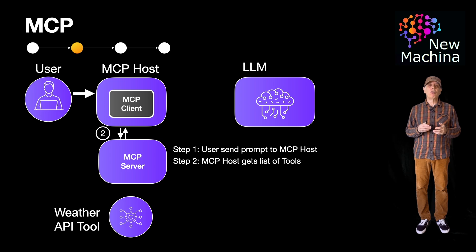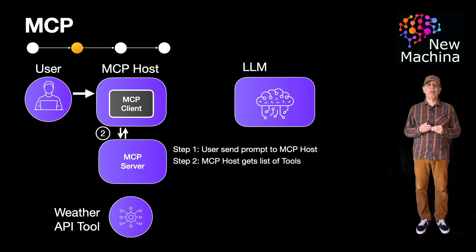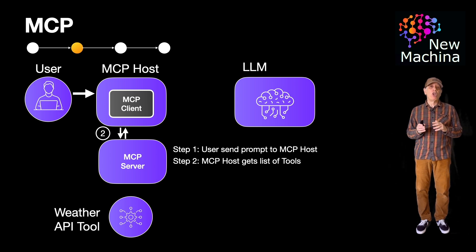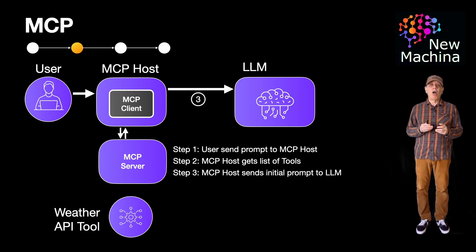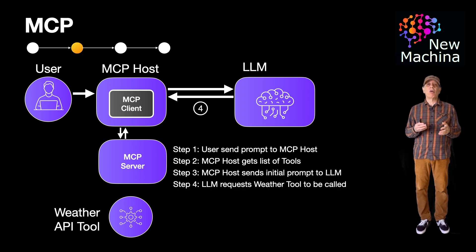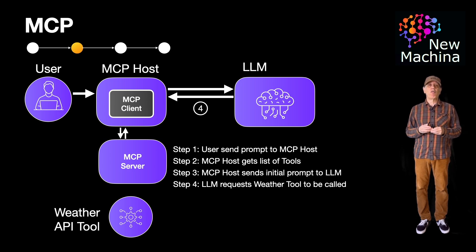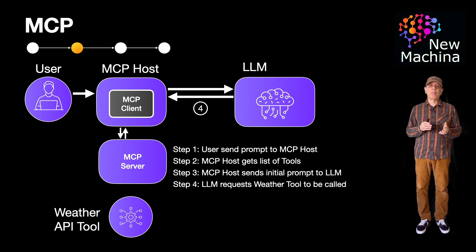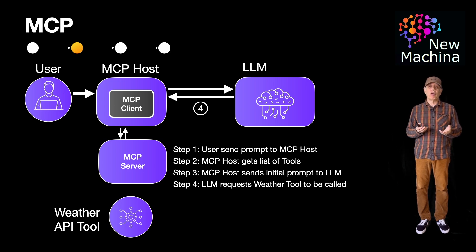Additionally, the MCP host gets a list of the available tools from the MCP server. In my example, I am showing one MCP server, but for your use case, just know you could have more than one. In step three, the MCP host prompts the LLM. In step four, the LLM receives and parses the prompt. In this example, the LLM recognizes the need to call the weather tool for the City of Austin. At this point, the LLM returns a response to the MCP host indicating that this weather tool should be invoked with the input parameter of Austin.